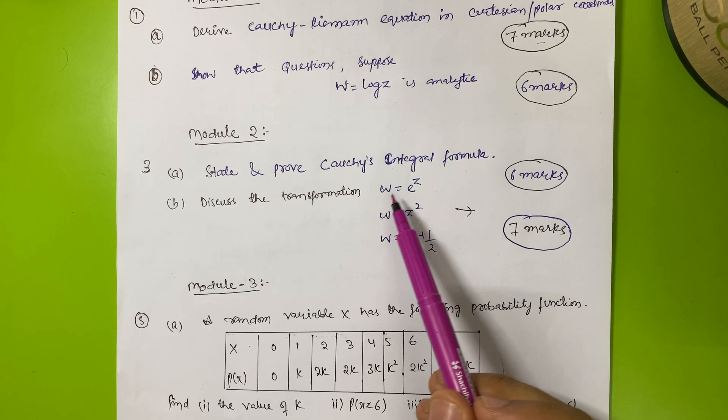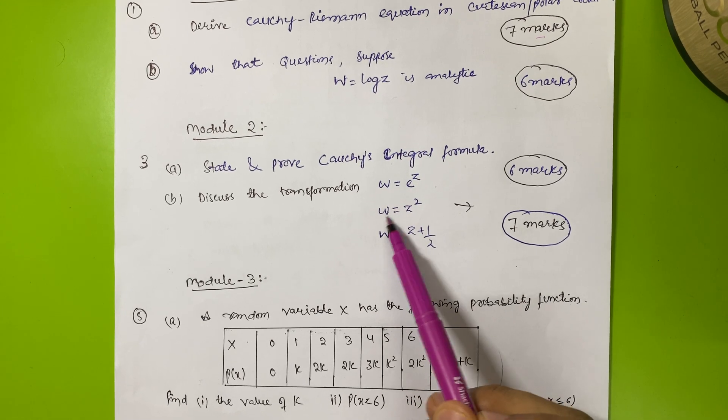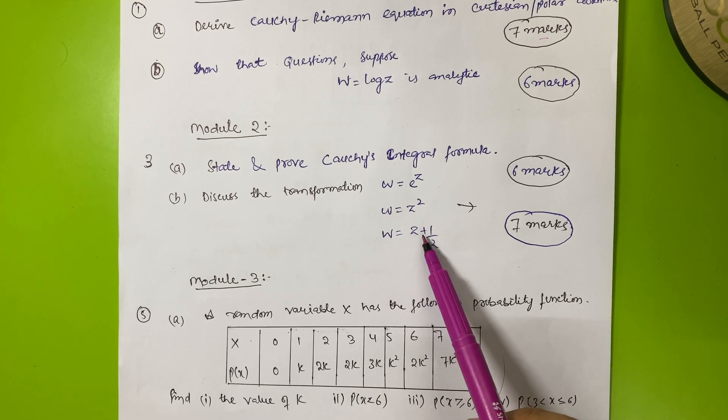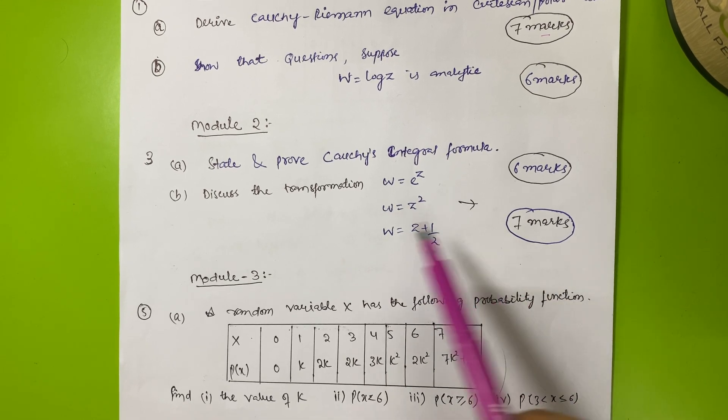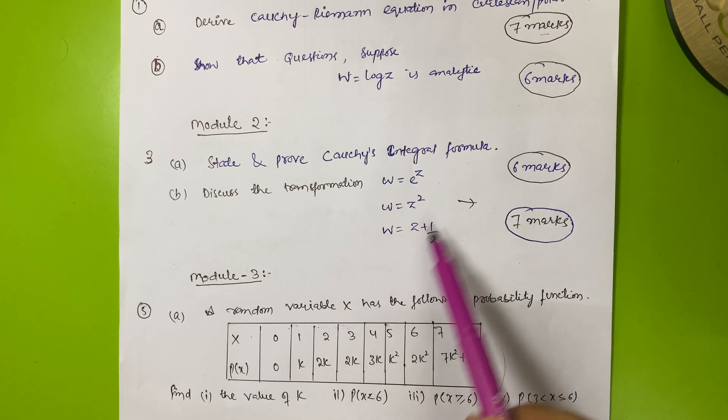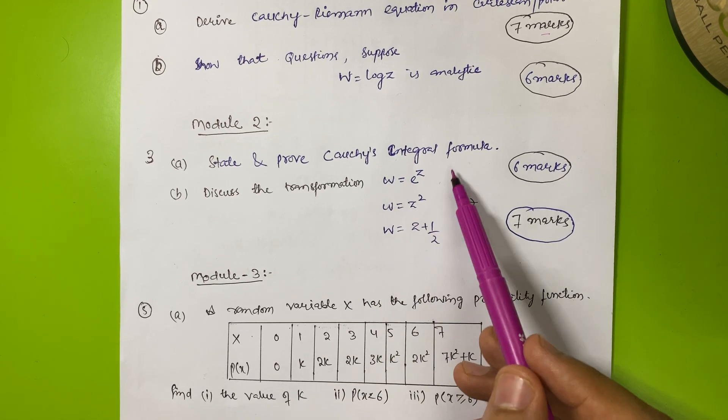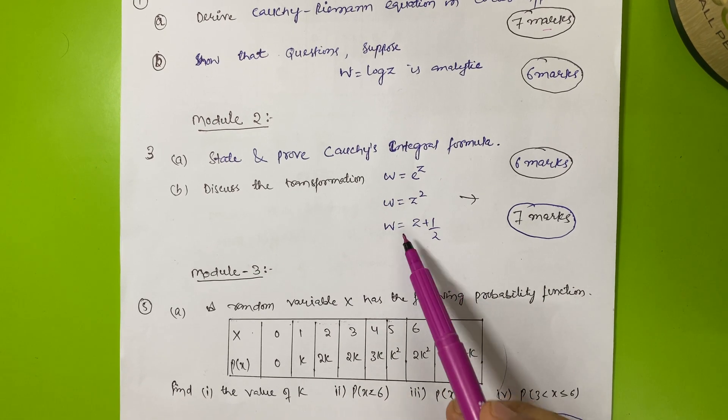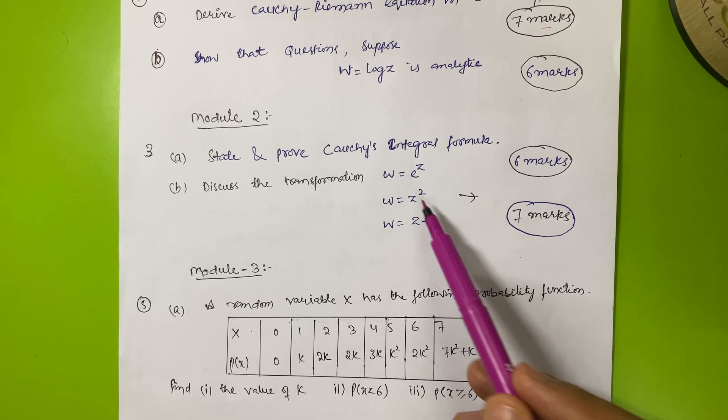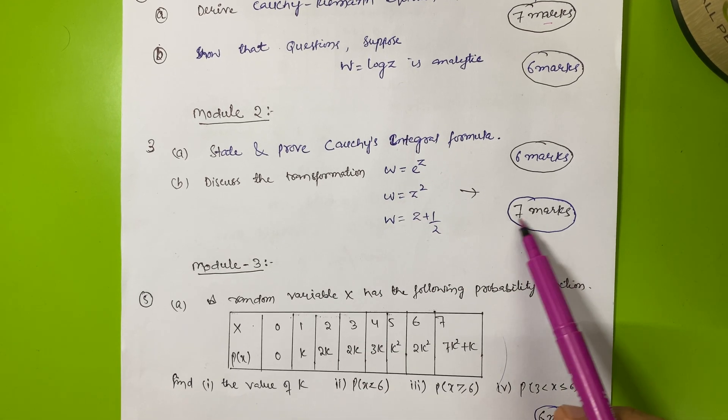Then discuss the transformation. There is probability of three questions: w equals e raised to power z, w equals z square, w equals z plus one upon two. You have to discuss the transformation of these three functions. Either they will ask you one at a time. This carries seven marks.